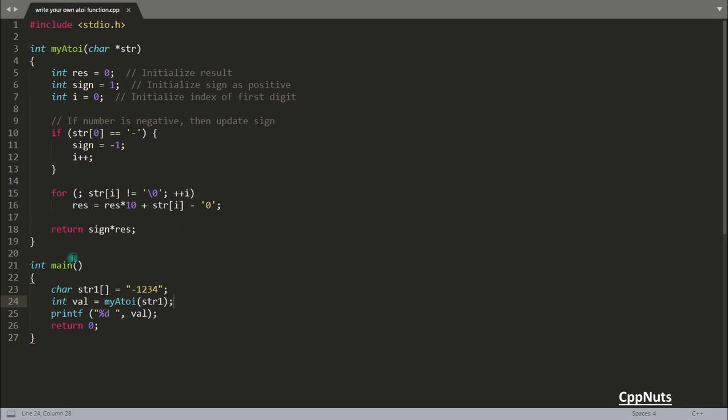This is the code for converting your character pointer into the integer. These are some variables we'll be using: this is our result, this is our sign bit, and this is the index currently pointing to the character array. These are just simple initializations.